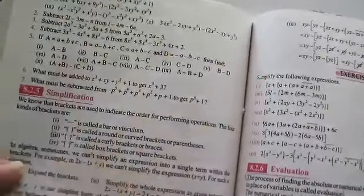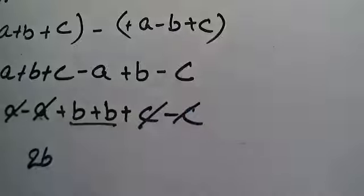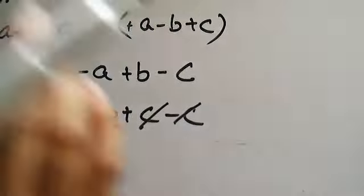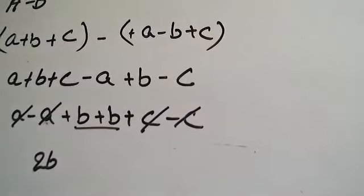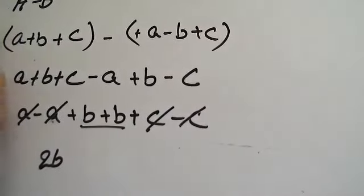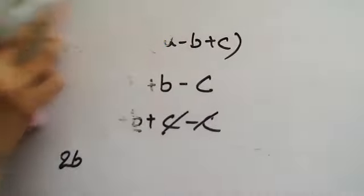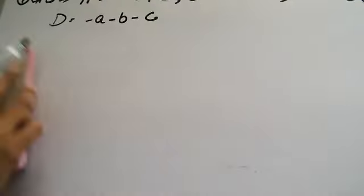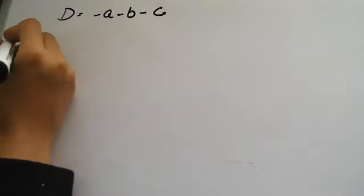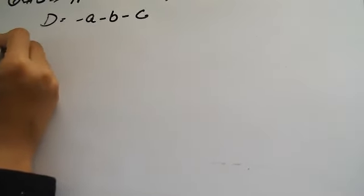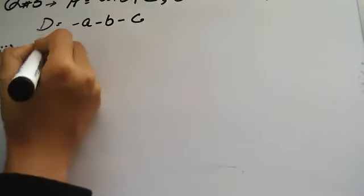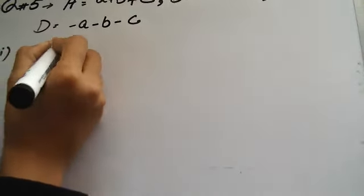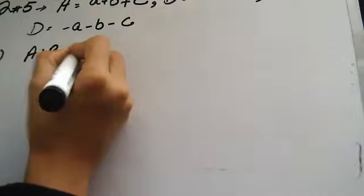Now let's go to part number 7. In part number 7 we have to find a plus b minus c. Here we have 7 parts, and the expression is a plus b minus c.